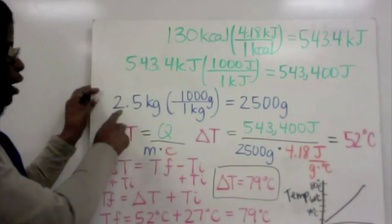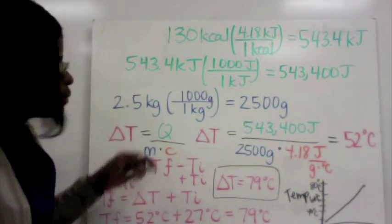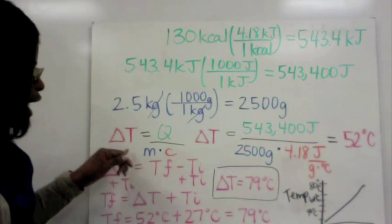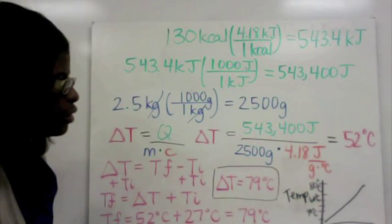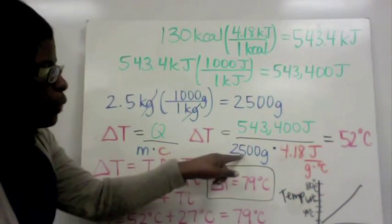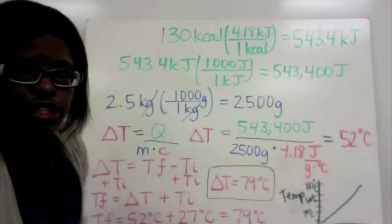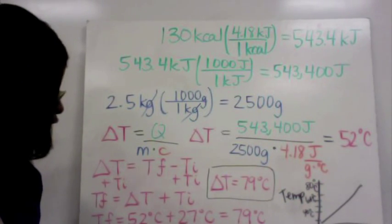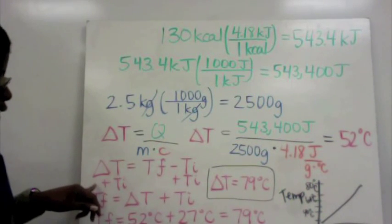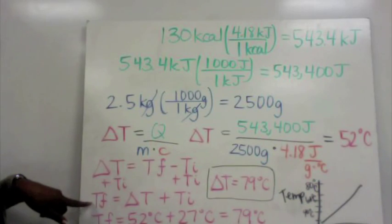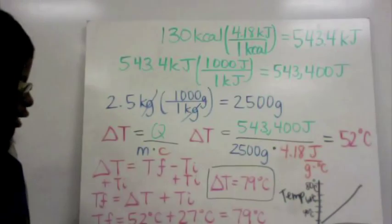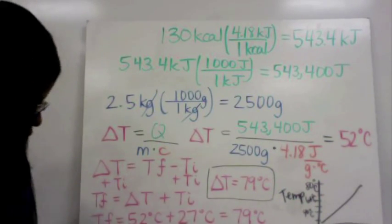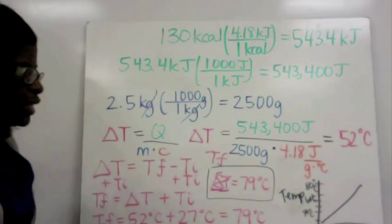Plugging into the rearranged equation: ΔT = 543,400 J ÷ (2,500 g × 4.18) = 52°C. Now rearrange ΔT = Tf − Ti to get Tf = Ti + ΔT. So Tf = 27°C + 52°C = 79°C. The final temperature is 79 degrees Celsius. On the graph, temperature increases from 27°C to 79°C over time.